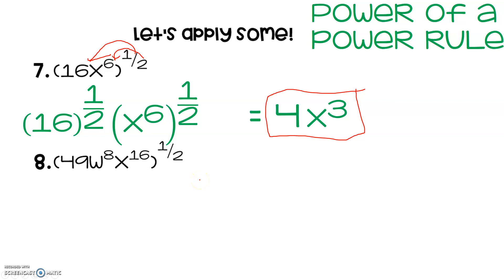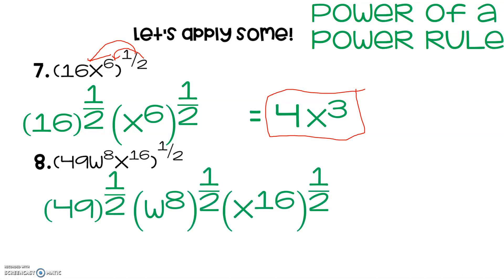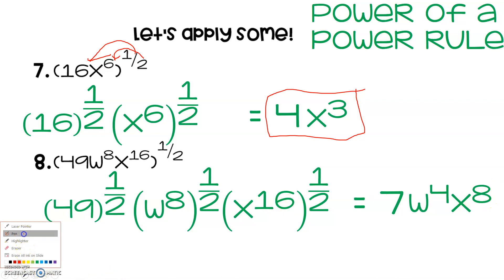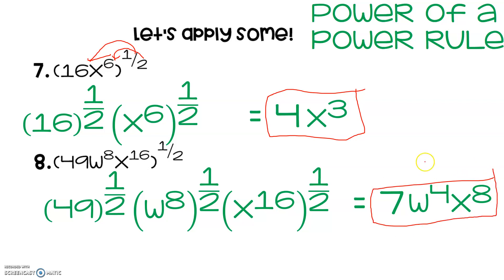We're going to apply the power of a power rule to number 8 as well. Each and every term gets that 1/2 power distributed out to it. Take the square root of 49, which gets you 7. Apply the power of a power rule: 8 times 1/2 for the exponent gets you 4. And half of 16 gets you 8. Box your final answer. These are the types of problems you will need to know how to solve — make sure you can simplify these, apply your power of a power rule, and don't worry about anything else. Thank you for watching, and come with questions if you have any.